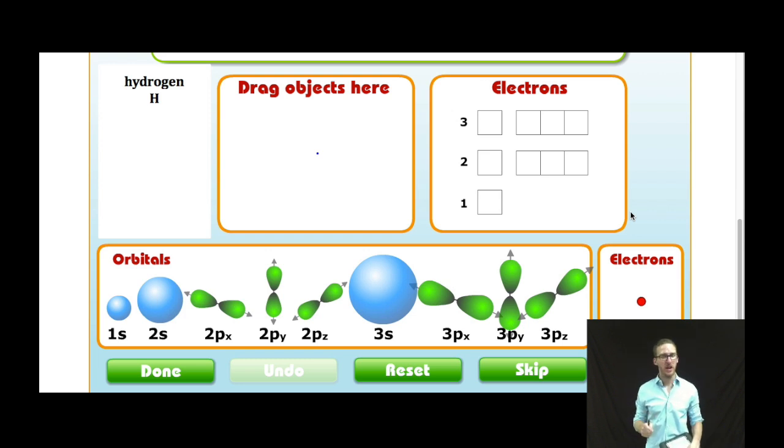Hey, what's up everybody? It's Mr. Boylan. We're going to use this simulation to help us better understand electron configurations and orbital orientation.